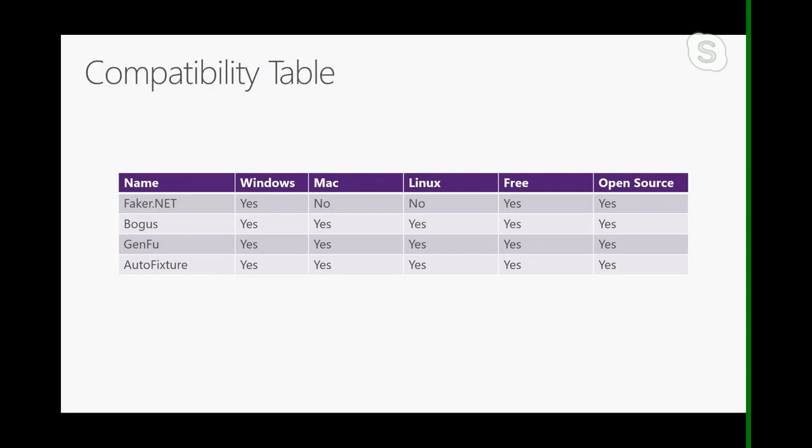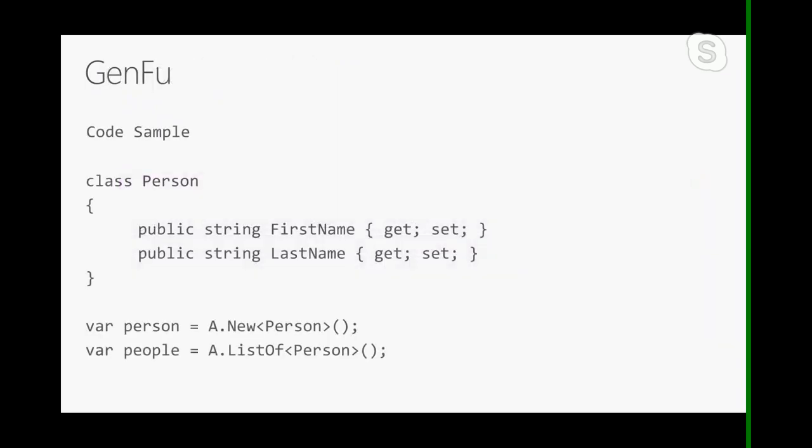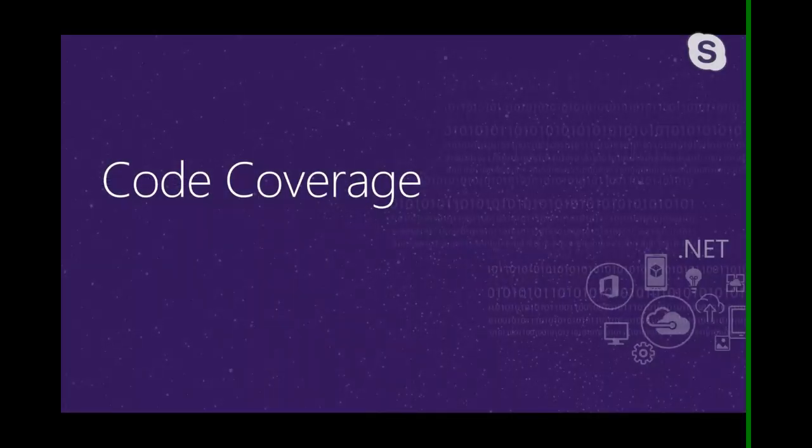All of these — except Faker.NET — are cross-platform, free, and open source. Here's an example using GenFu: you have a Person class, and you're able to create a single person or a list of people. GenFu generates data by populating the FirstName and LastName properties of the Person class. If you wanted to test with a list of a thousand people, you no longer need to write code to create all of them — fake data generators handle that for you.